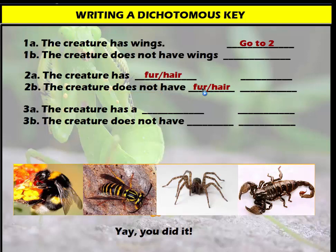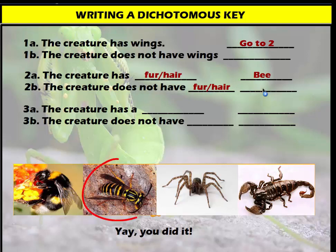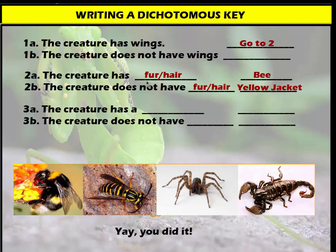At this point we can identify the individual organisms. The creature that has wings and has fur is the bee. The creature that has wings but does not have fur is the wasp. That's how we use the dichotomous key — a series of statements based on physical characteristics to eventually identify an organism.